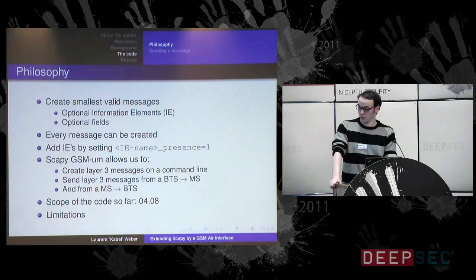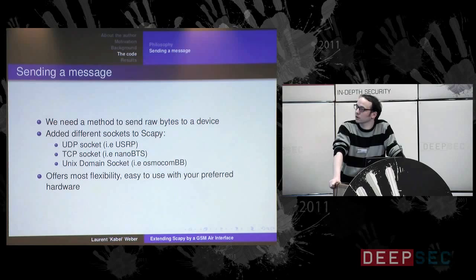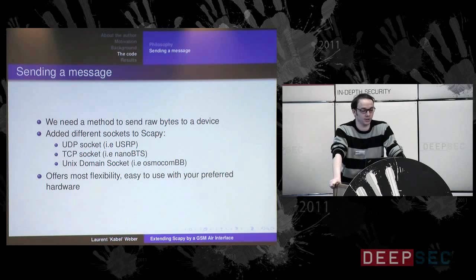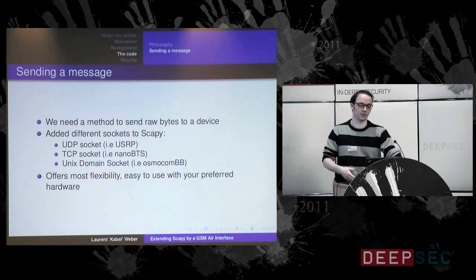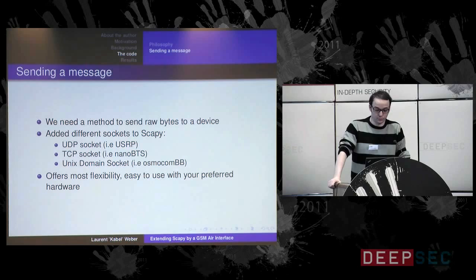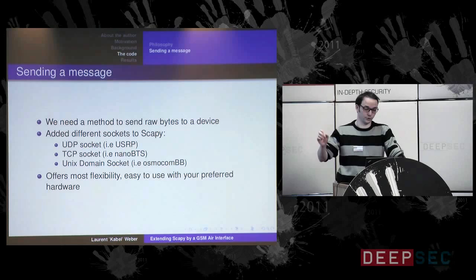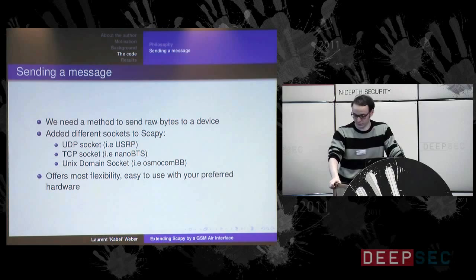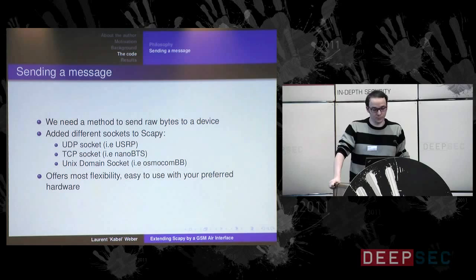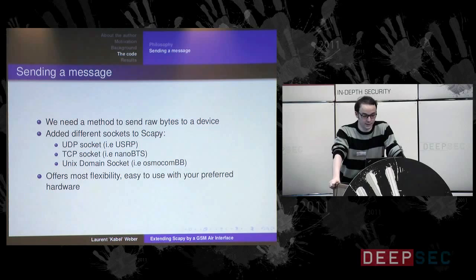Now I come to the part about sending messages over hardware. We need a method to send raw bytes to some hardware tool. Usually when you use Scapy, you simply send it over Ethernet and everything is done. But for this case I had to change something. I found that the easiest way would be to use an OpenBTS function that opens a UDP socket, and then you can simply push your raw packet onto that socket. Quite easy to implement.